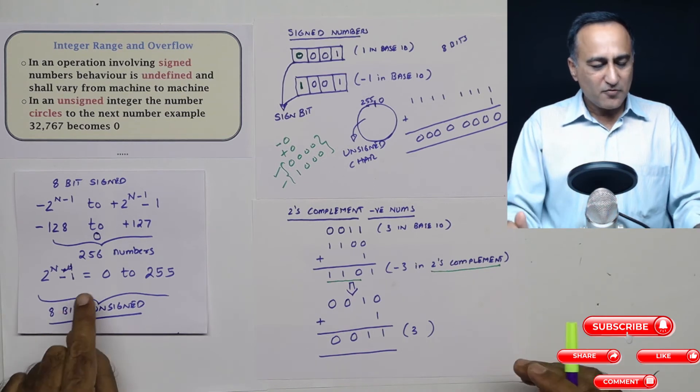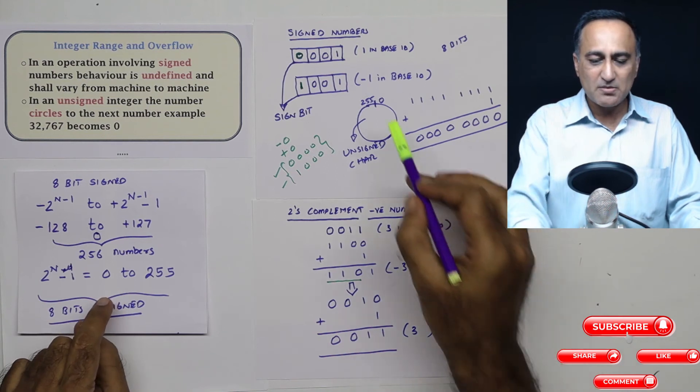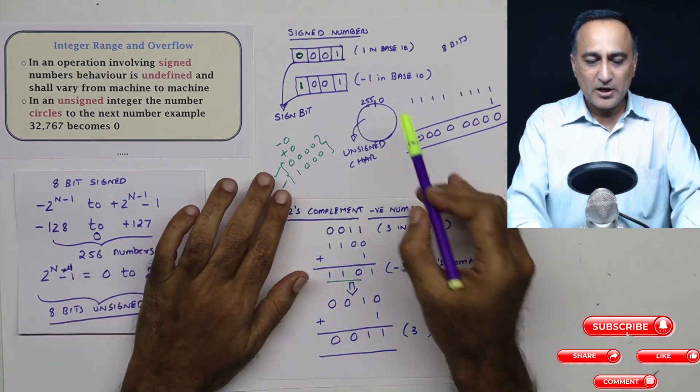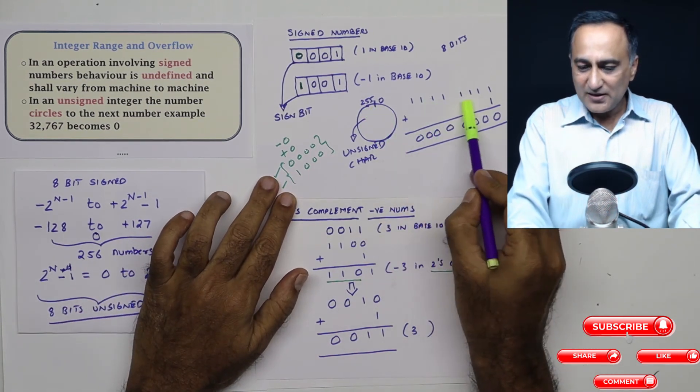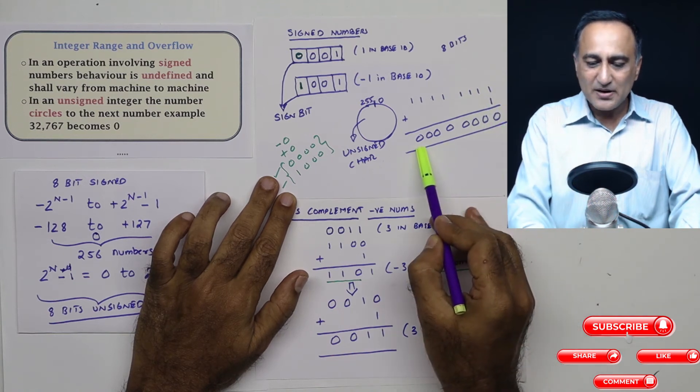Now, let's assume we have an unsigned int of eight bits. So the minimum number is zero, the maximum number is 255. If I represent 255 in a binary system and add one to it, you will see that it ends up becoming zero.